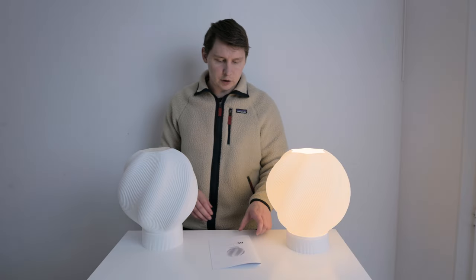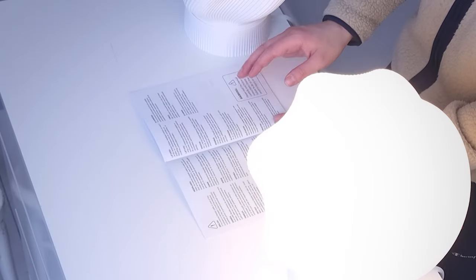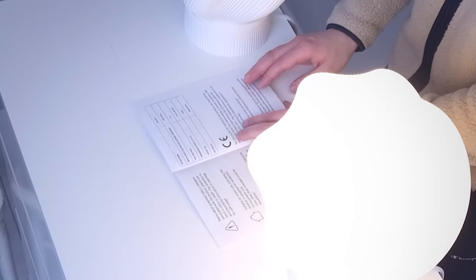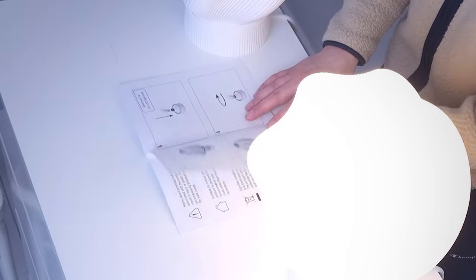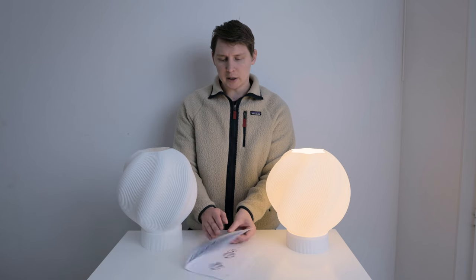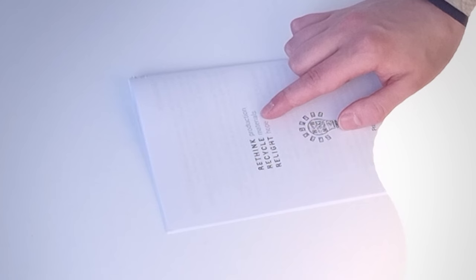I have also designed this manual. The manual is quite boring because you have a lot of these warnings and everything. This is also what's required to actually sell a lamp. A lot of symbols, of course assembly instructions. But in the back, we have my concept behind this lamp: rethink production, recycled materials, and relight home. And what do I mean by this?